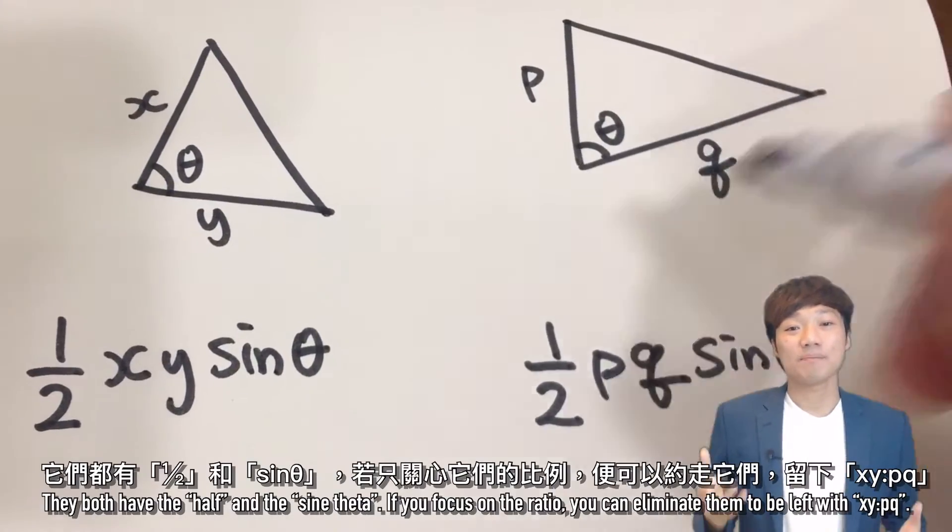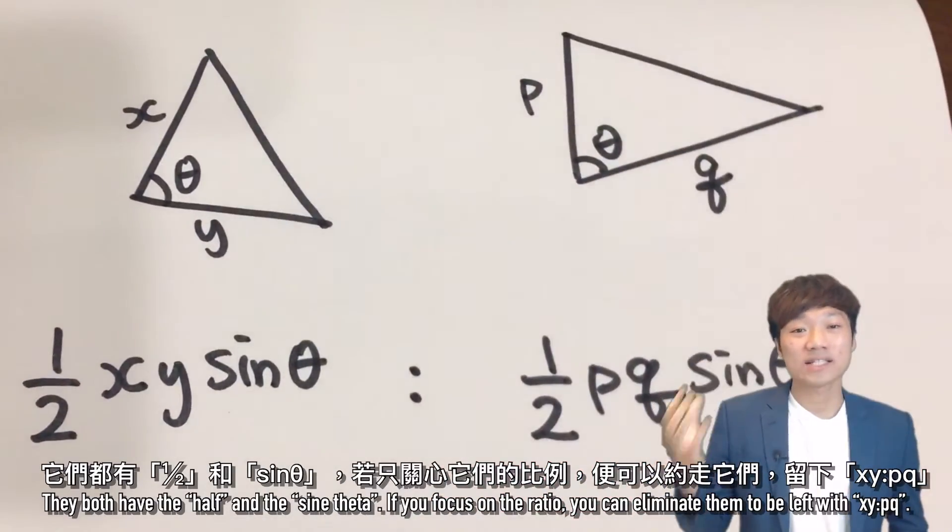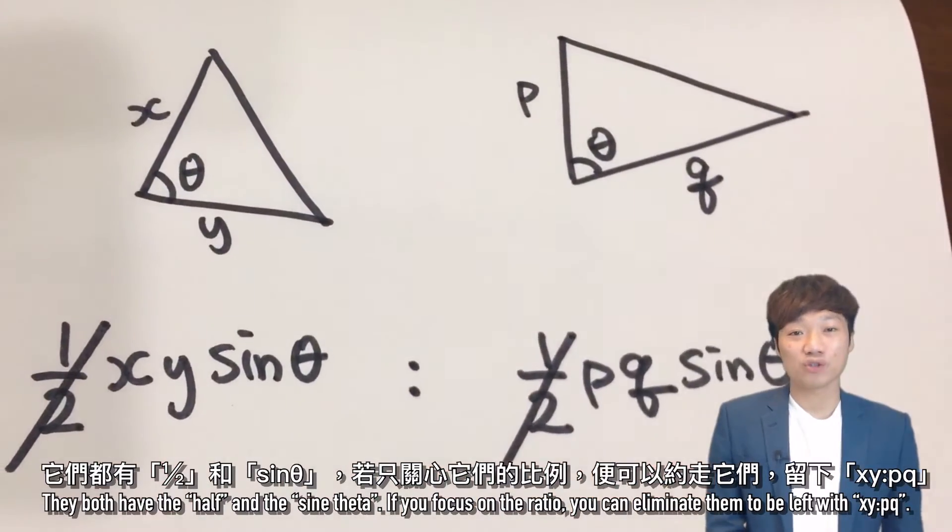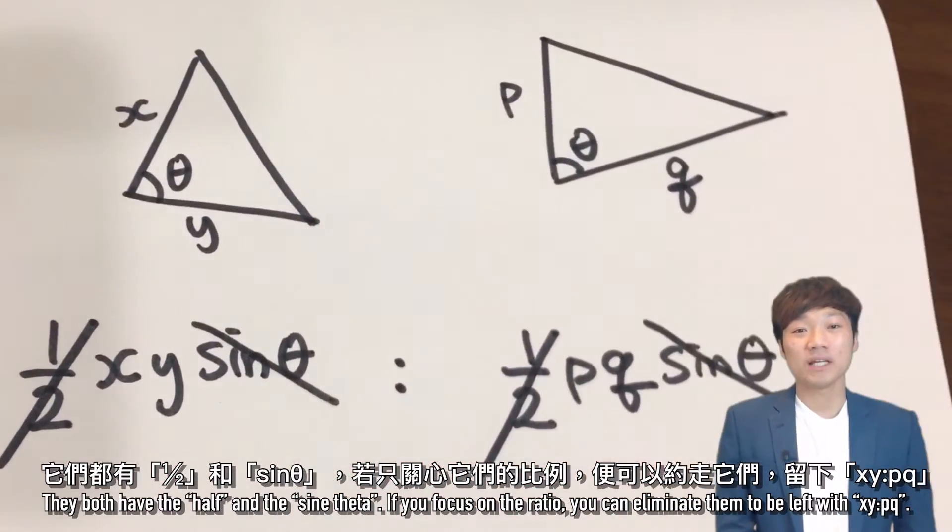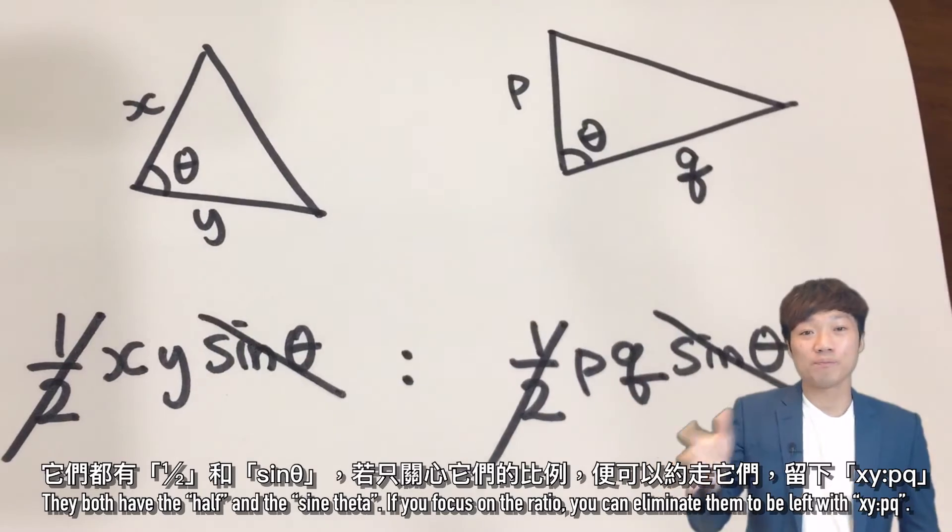As you can see, they both have half and sine theta. If you only focus on their ratio, you can eliminate them to be left with XY to PQ.